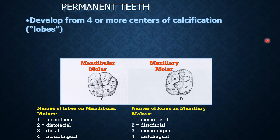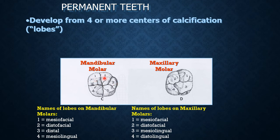In anterior teeth, there are four lobes — three on the facial side and one on the lingual side. In posterior teeth, specifically molars, the names of the lobes correspond to the number of cusps. For the mandibular first molar, there are three cusps on the facial surface and two on the lingual. The lobes are named the same as the cusps: meso-facial lobe, disto-facial lobe, distal lobe, mesolingual lobe, and disto-lingual lobe.